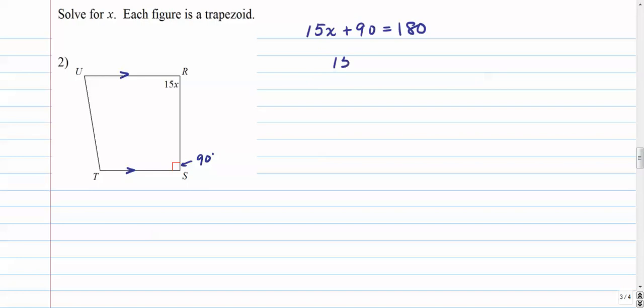So we just, you know, kind of like solve this. We subtract 90 from both sides. Subtract 90 from both sides, we get a nice cancellation here, and we get 15x equals 90, so that's what, 6, right, x is 6, yeah. Okay, the question's asking you to solve for x, so we're finished.